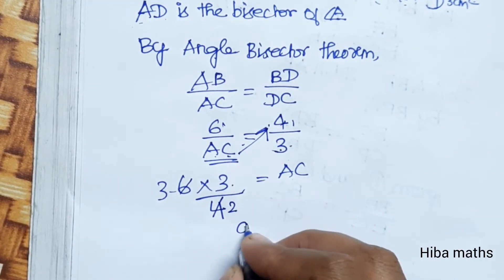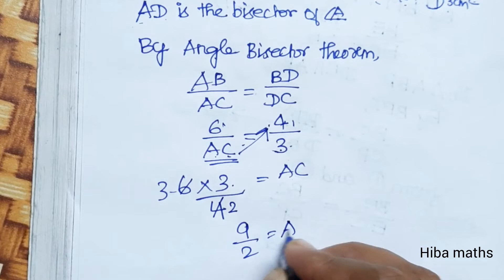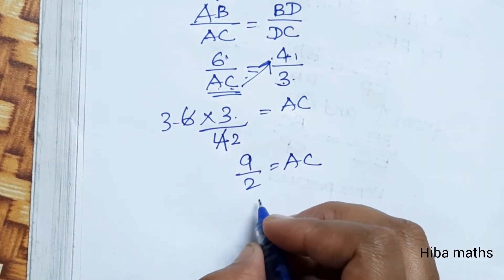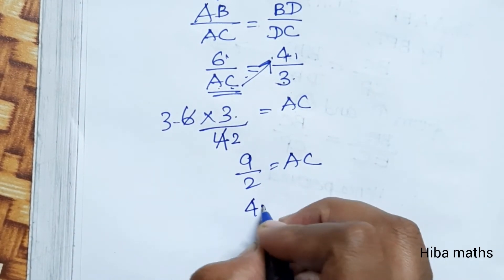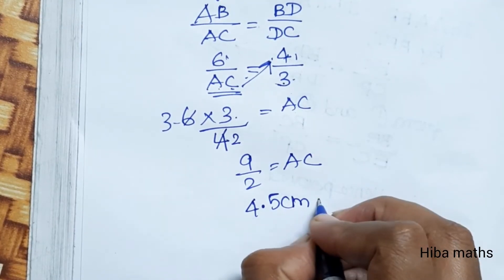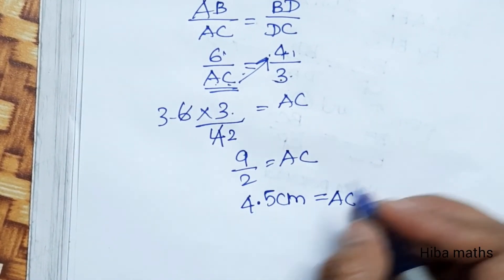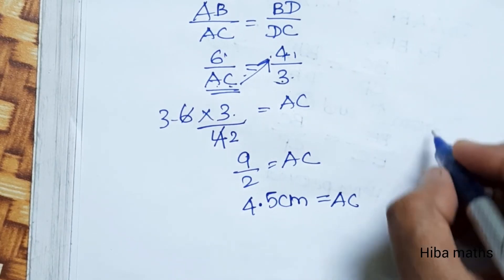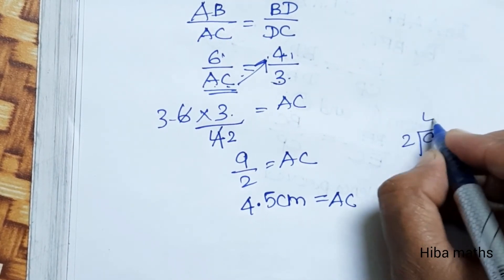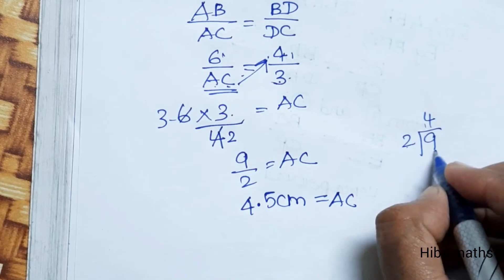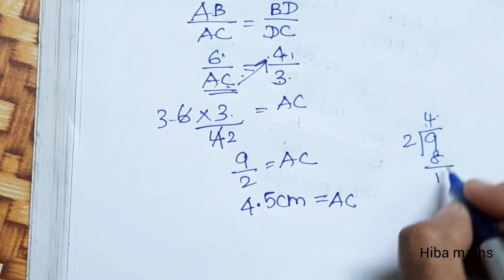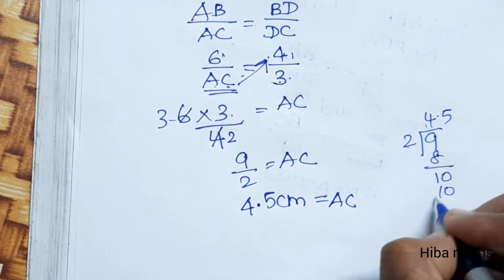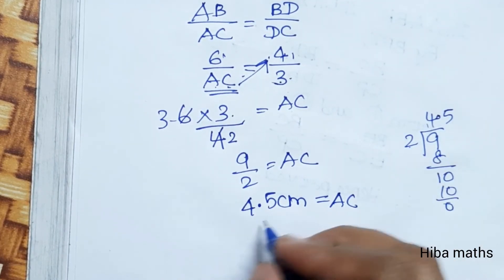Solving the proportion gives 9 divided by 2, which equals 4.5 cm. That is the value of AC. For the division: 2 times 4 is 8, balance 1, bringing down gives 10, 2 times 5 is 10 — answer is 4.5.